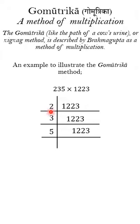Now the next step will be to multiply 2 into 1223 and substitute that value as 2446. The same with 3 multiplied by 1223, that will be 3669, and 5 into 1223